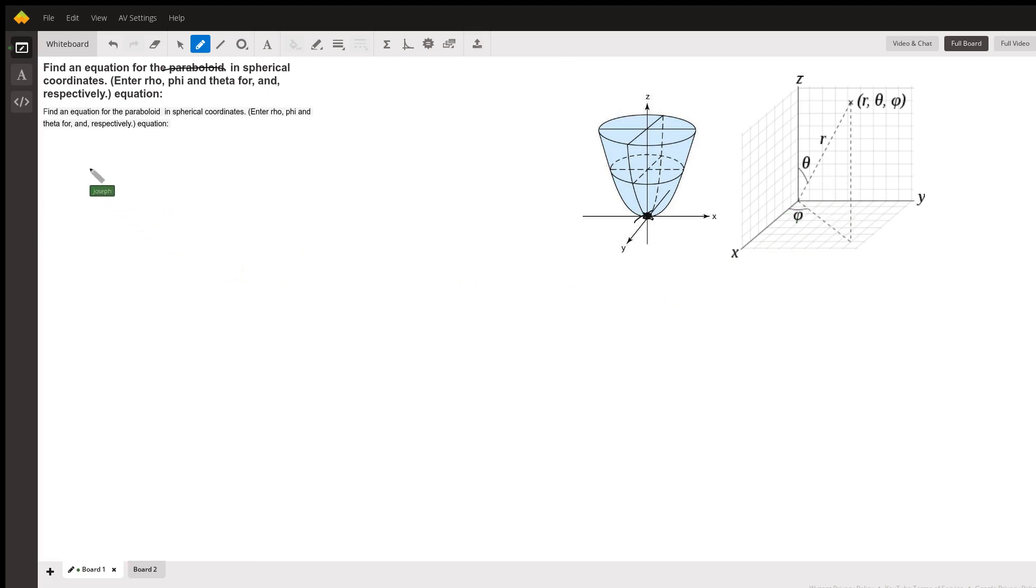So the first thing to notice is the function of a paraboloid. The general one would be something like this. Okay, so this is the paraboloid that is not centered at zero and that doesn't have the same curvature in either direction.